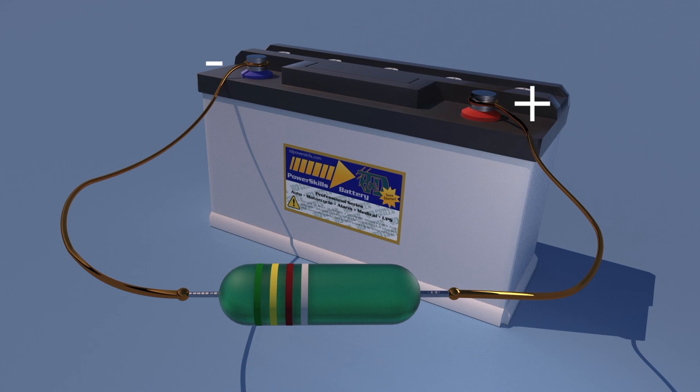In this DC circuit, and in all other DC circuits, current always flows in one direction. The negative terminal of a DC power source, like this battery, is always the negative terminal, and the positive terminal is always the positive terminal.